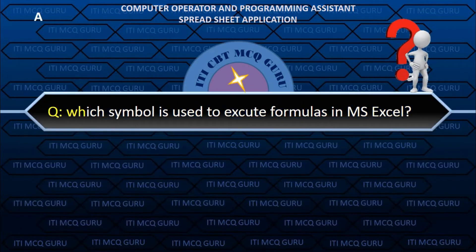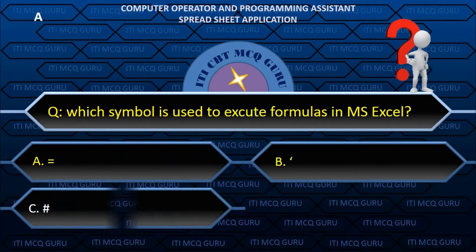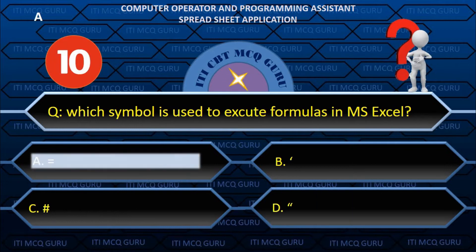Which symbol is used to execute formulas in MS Excel? A. Equals sign (=).